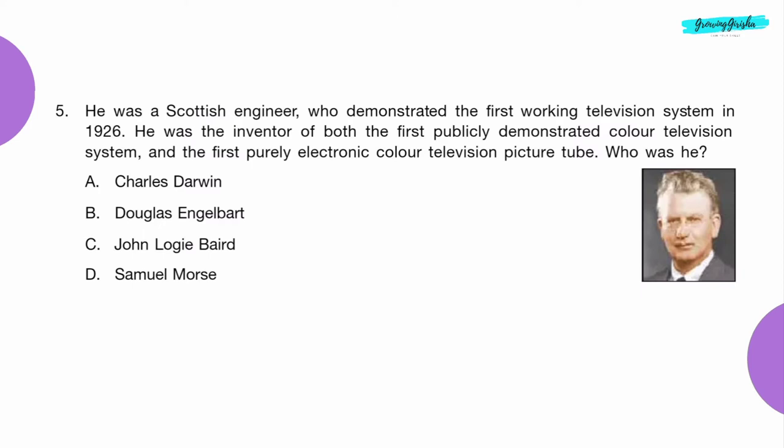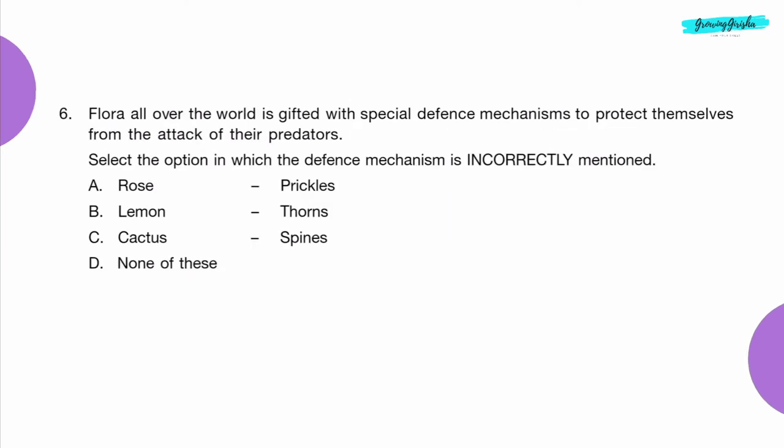Question 5: He was a Scottish engineer who demonstrated the first working television system in 1926. He was the inventor of both the first publicly demonstrated colored television system and the first purely electronic colored television picture tube. Who was he? Option C: John Logie Baird.